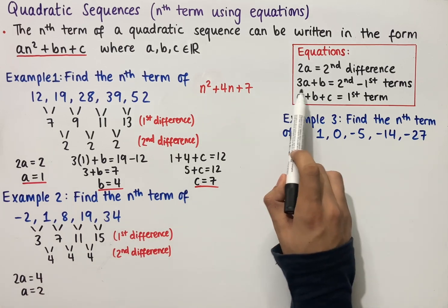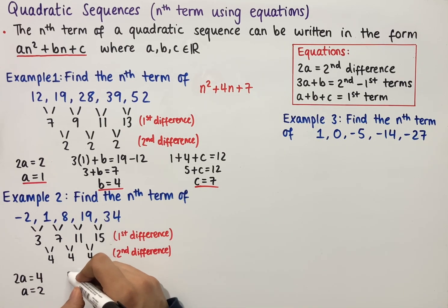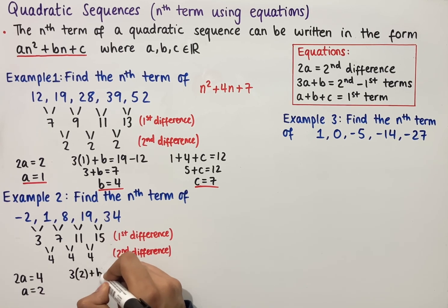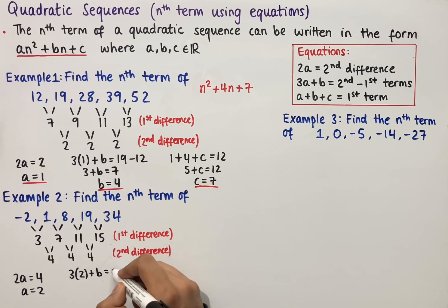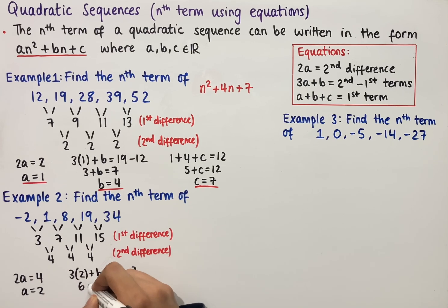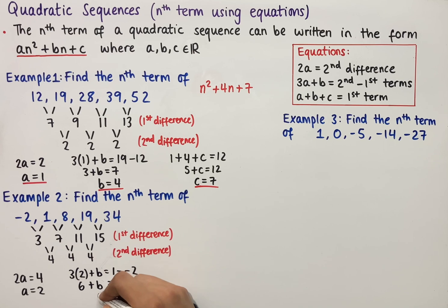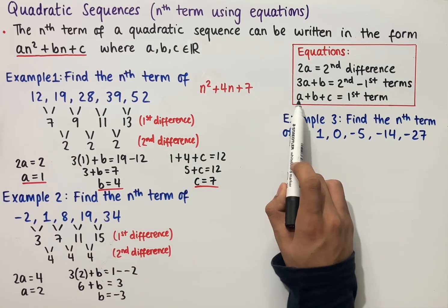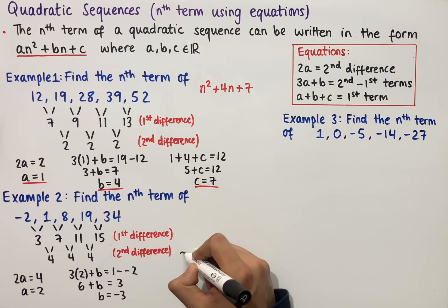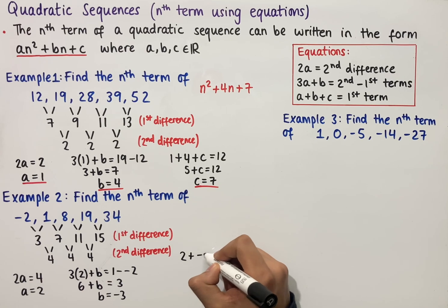Using our second equation we have 3a plus b equals the second term minus the first term. So that's 3 times 2 plus b which equals 1 minus minus 2. This simplifies to 6 plus b equals 3. And solving this gives us b equals minus 3. Using the last equation we have a plus b plus c equals the first term. We know the value of a which is 2, and b which is minus 3.